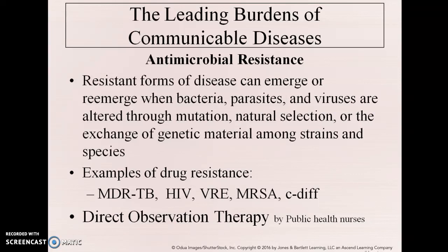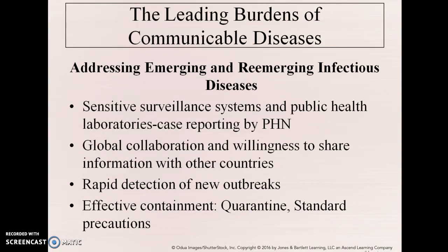Burdens include antimicrobial resistance — tuberculosis multi-drug resistance, VRE, MRSA, C. diff — things you've seen in hospitals. Ways to prevent that include direct observation therapy (DOT), where public health nurses give medications and watch patients take them, which is particularly effective for tuberculosis. We also have surveillance systems and global collaboration, rapid detection to prevent new outbreaks, effective quarantines, and cooperation at airports and border crossings where countries share information to keep their populations safe.